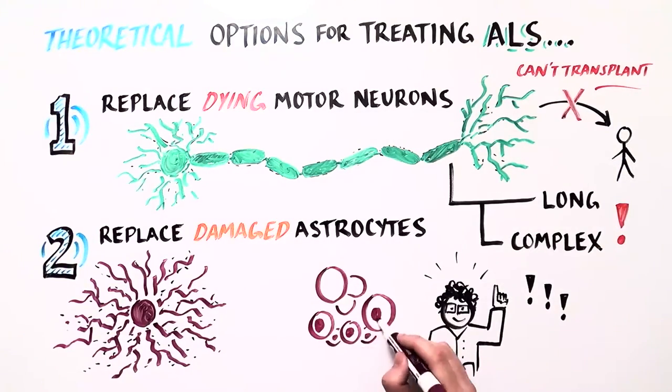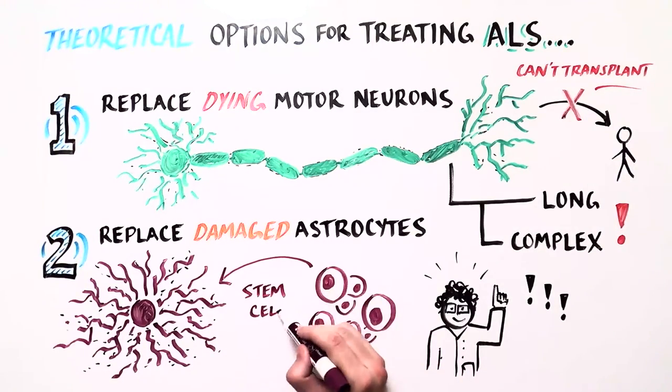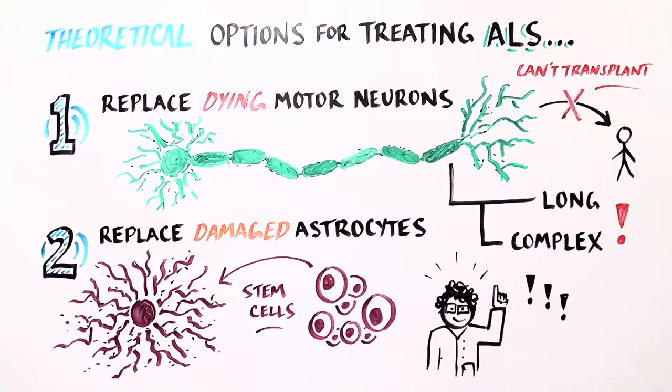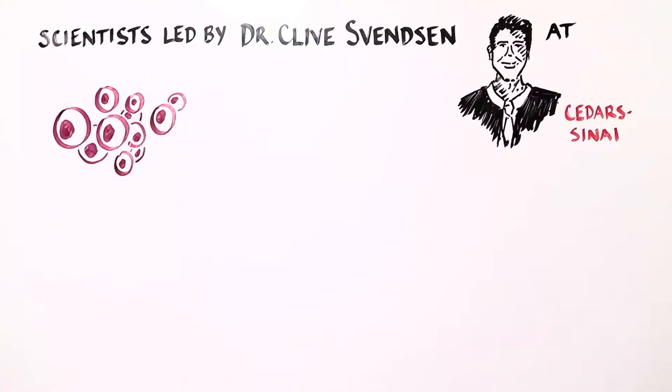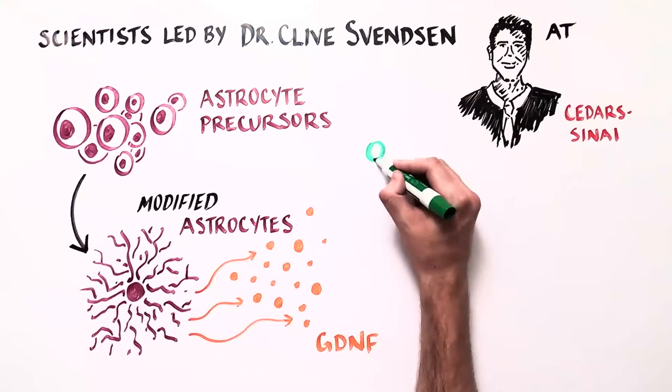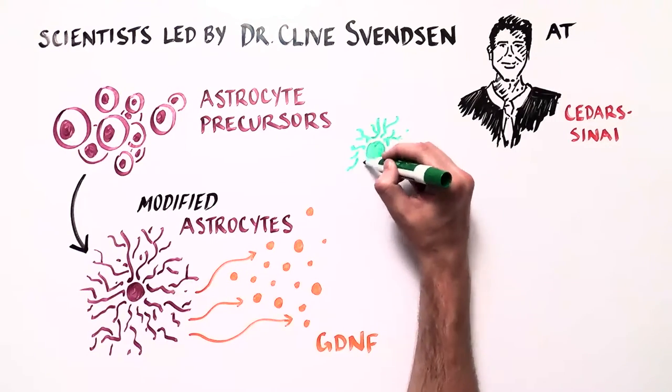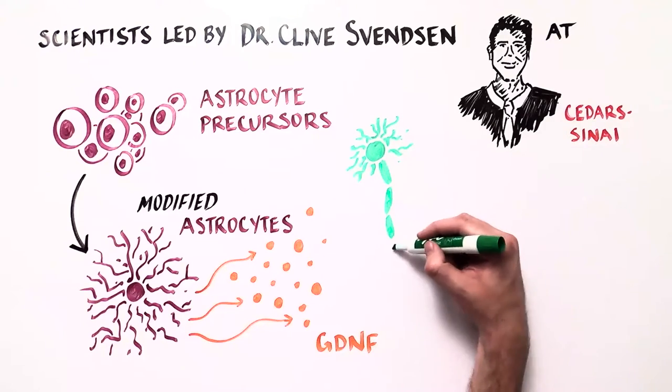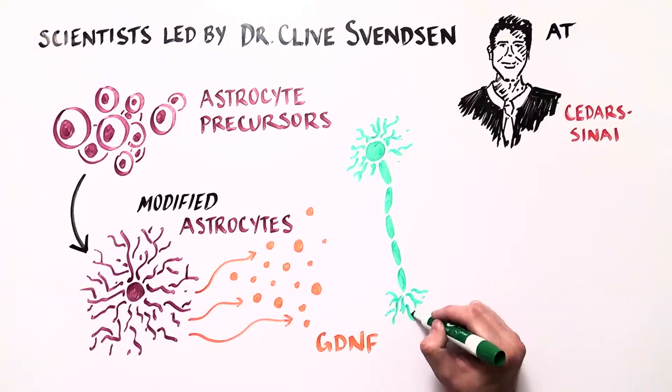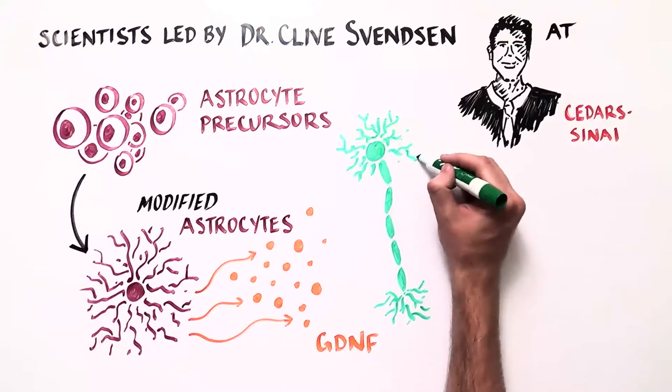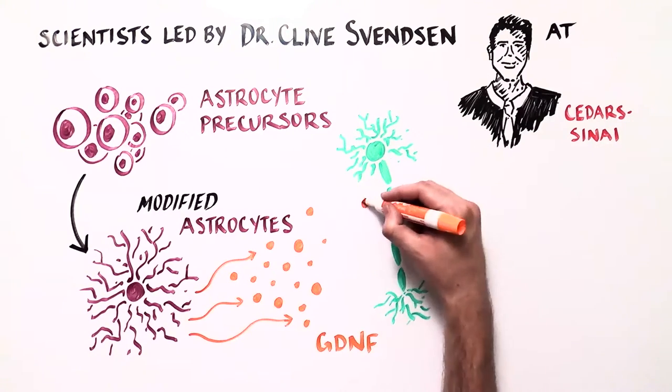Scientists are using stem cells to find ways to prevent the motor neurons from dying by replacing damaged astrocytes. One group of scientists is attempting this approach using astrocyte precursor cells. While astrocytes may provide great support on their own, Svensson has further modified the cells to secrete a powerful growth factor called GDNF.